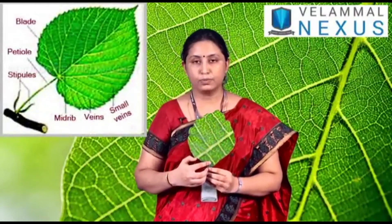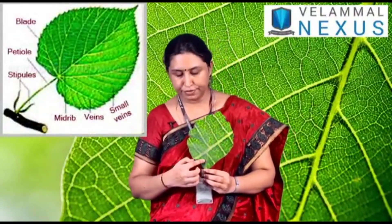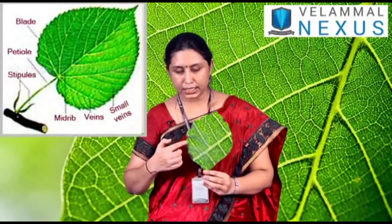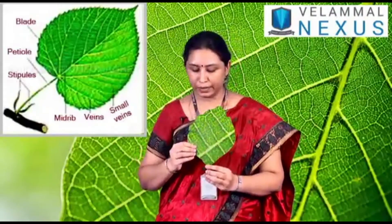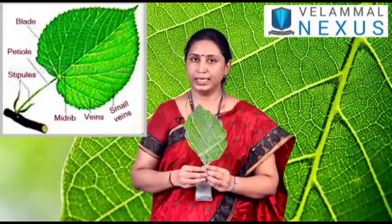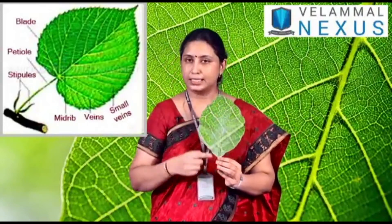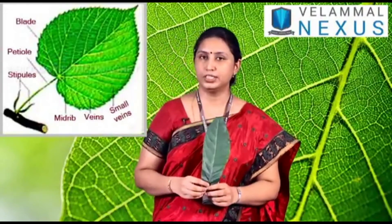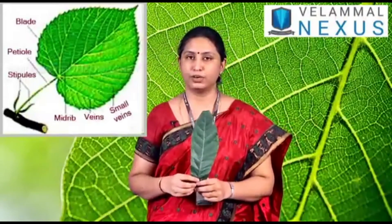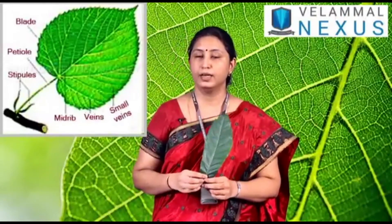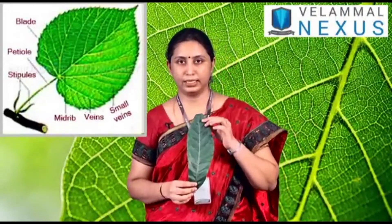Several small veins arise from the main vein and run all over the leaf blade. These veins are called side veins. Usually, each leaf has one main vein and many side veins.